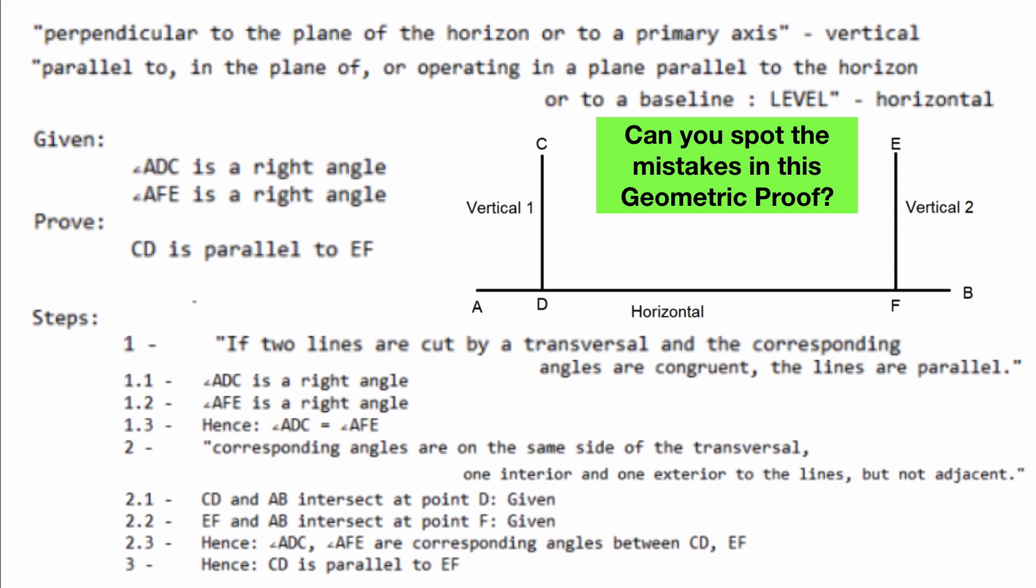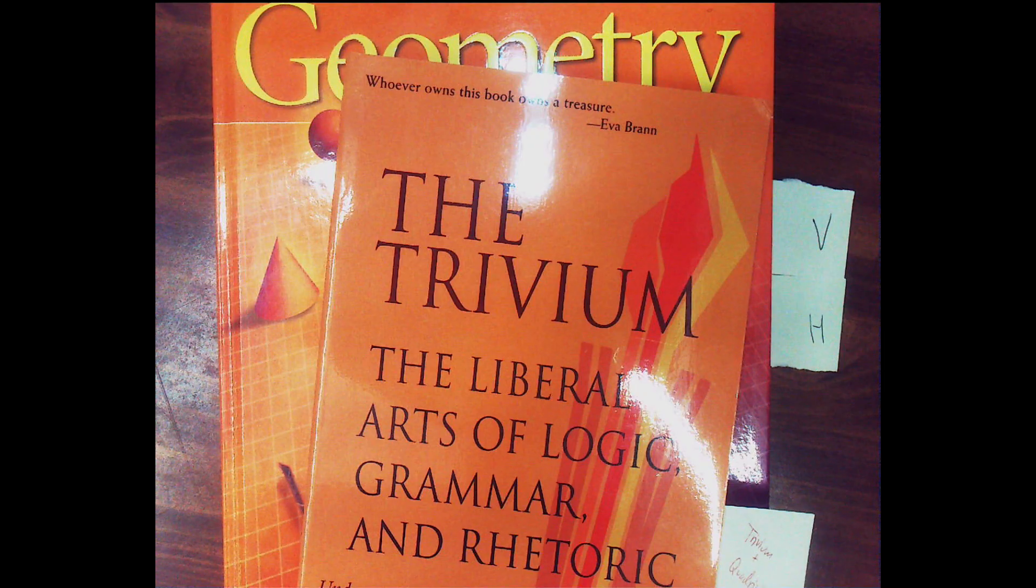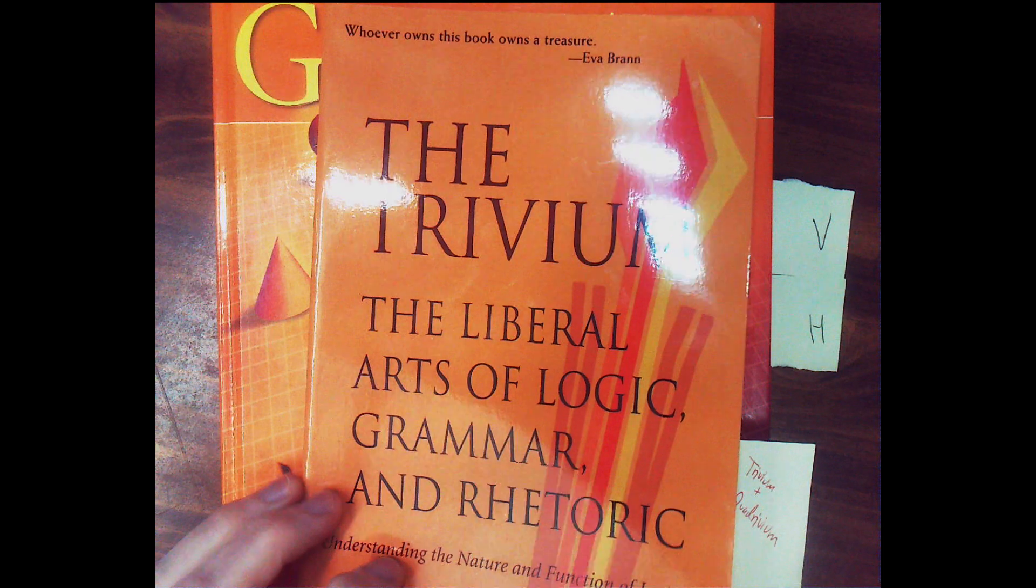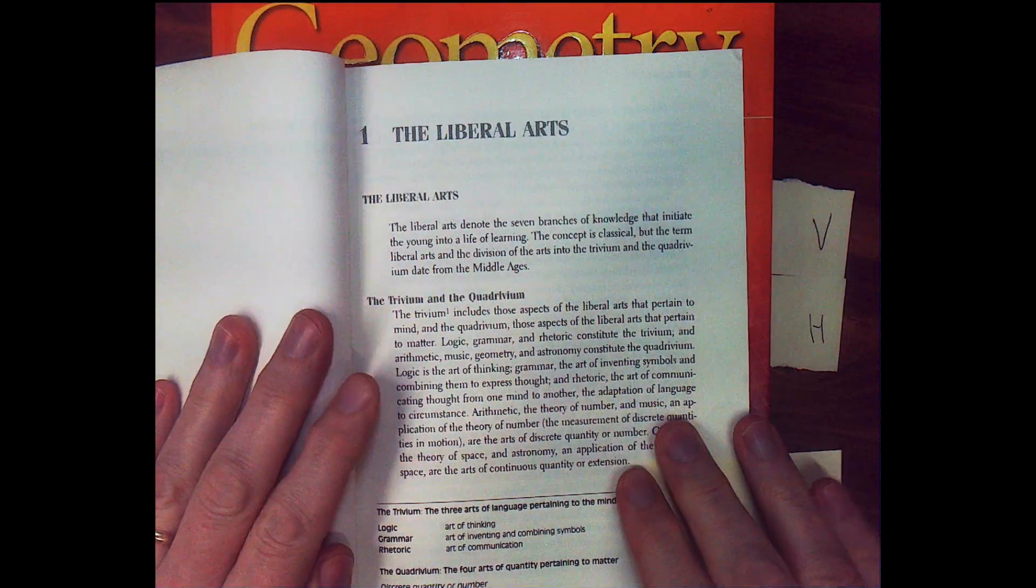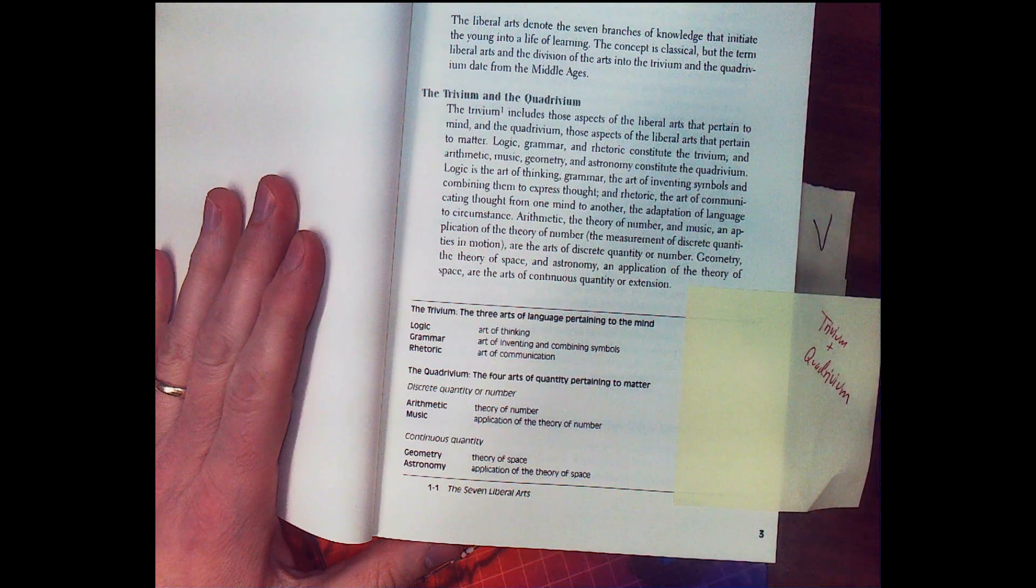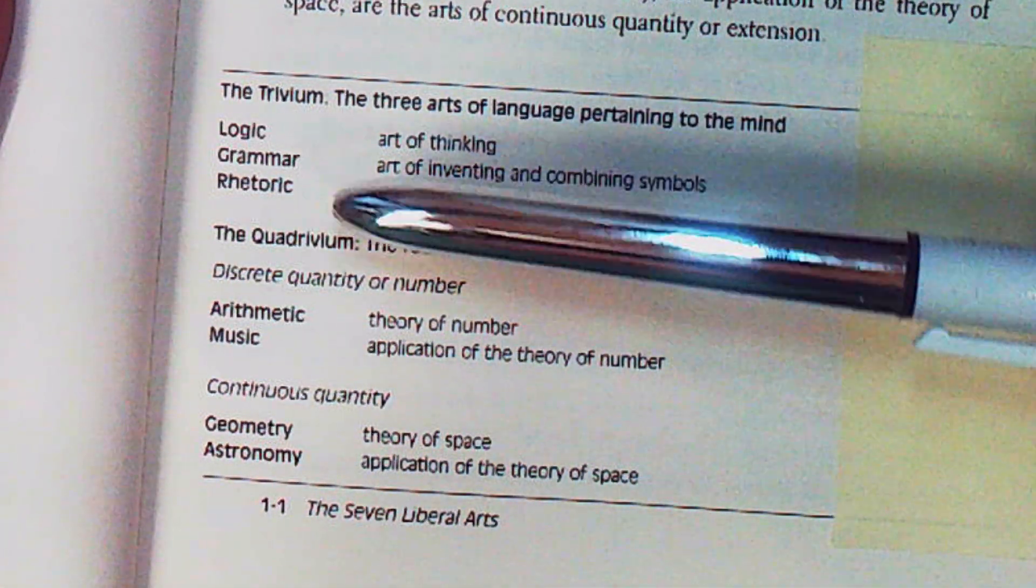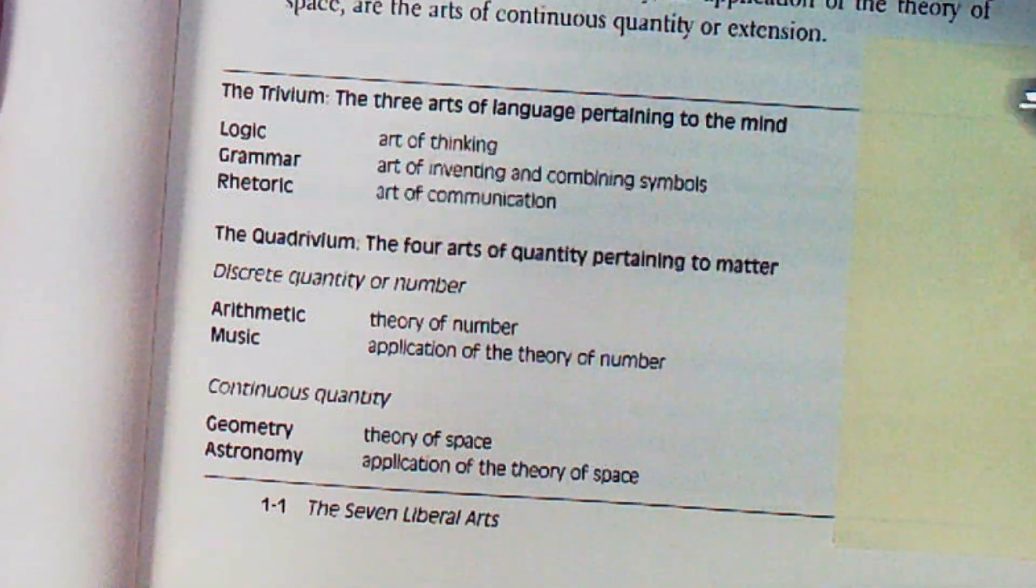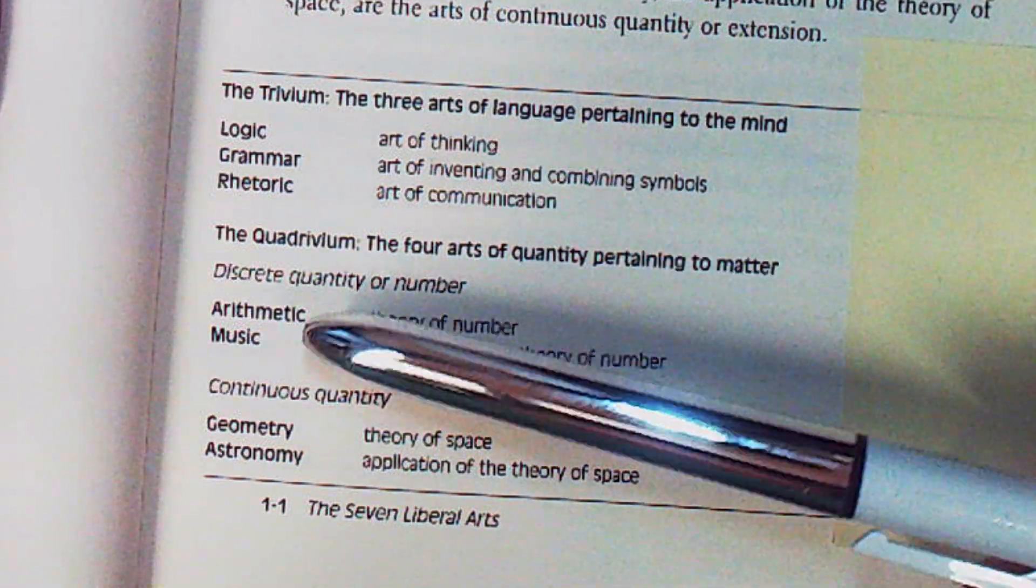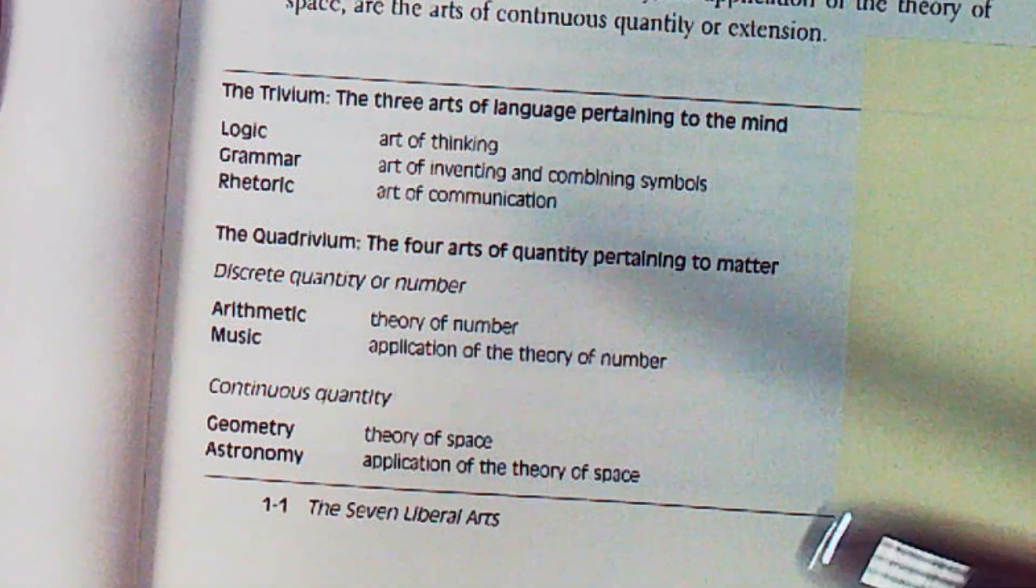Let's start by looking at the Trivium, which is the first three books in the liberal arts. So I like the way the author says the Trivium is logic, grammar, and rhetoric. But then the four remaining books in the seven liberal arts are arithmetic, music, geometry, and astronomy.